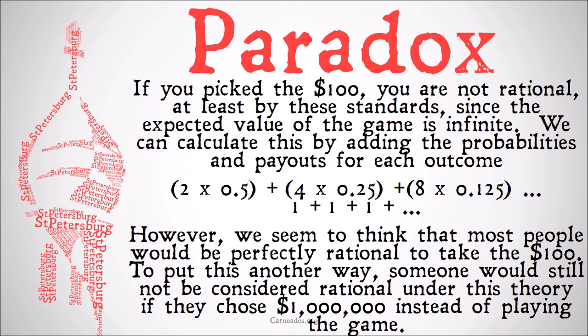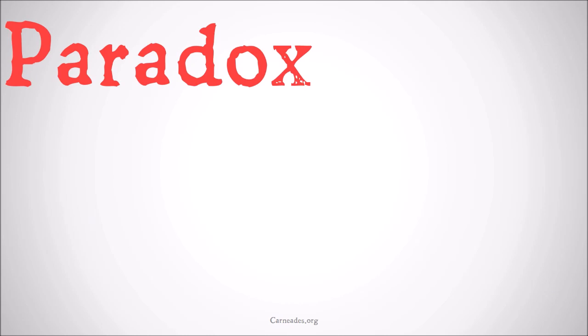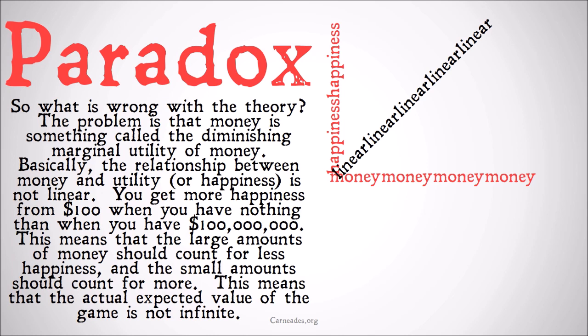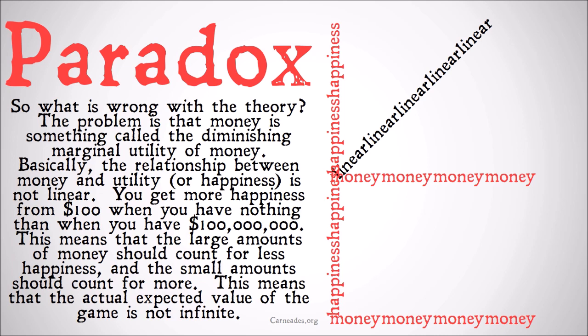What can we do to explain this problem if we want to stick with rational choice theory? The issue is something called the diminishing marginal utility of money. If we imagine a graph with money on one axis and happiness on the other, this theory assumes a linear relationship — as money goes up, happiness goes up proportionally. So the amount of money you have is equivalent to the amount of benefit you're getting from a choice. However, there is a lot of evidence that money in fact has a logarithmic relationship to happiness, or at the very least, a diminishing marginal utility.